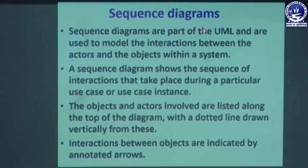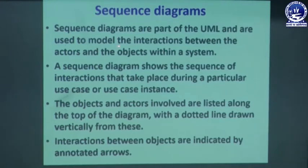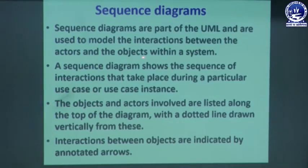Let's look at the sequence diagram, which we use to represent interaction between components or between systems — the interaction between actor and object, the functionalities, and how they are connected. Sequence diagrams are part of the Unified Modeling Language (UML) and are used to model the interaction between the actor and the object. A sequence diagram shows the sequence of interactions that take place during a particular use case or use case instance.